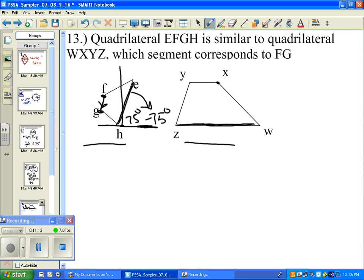But having said that, what we have to do is we have to find what is similar, what the segment corresponds to FG. FG is this, going from this point to this point. And if we look at this, this will be XY.